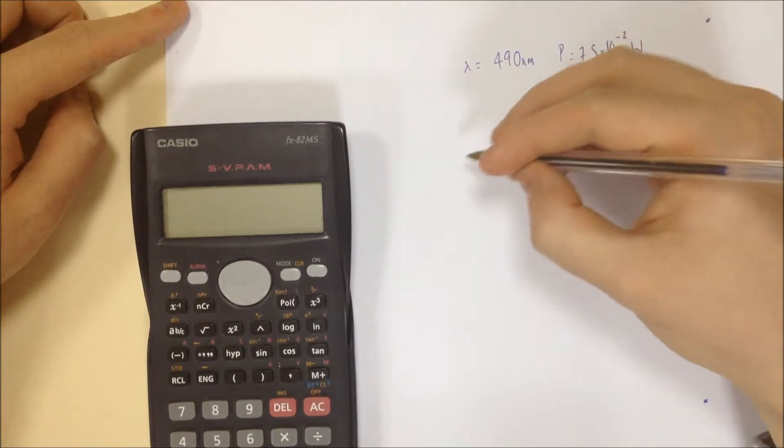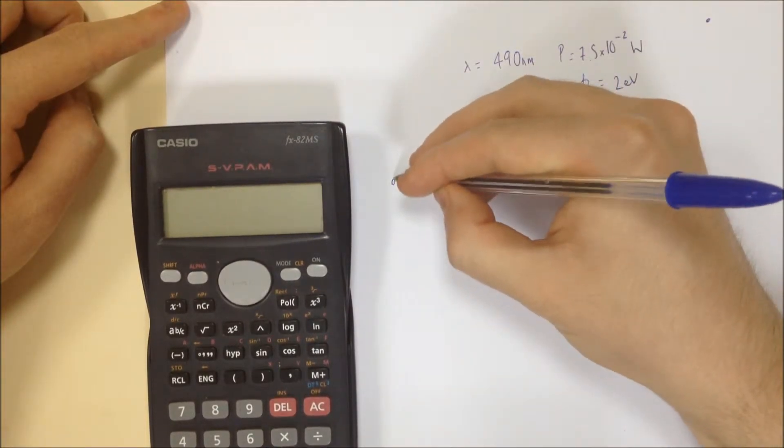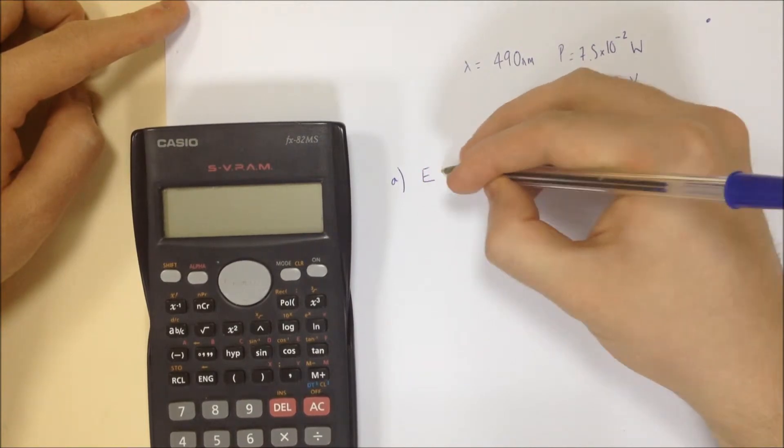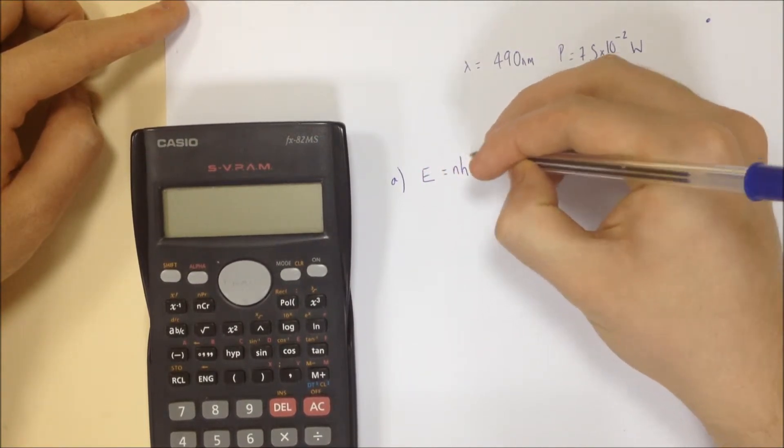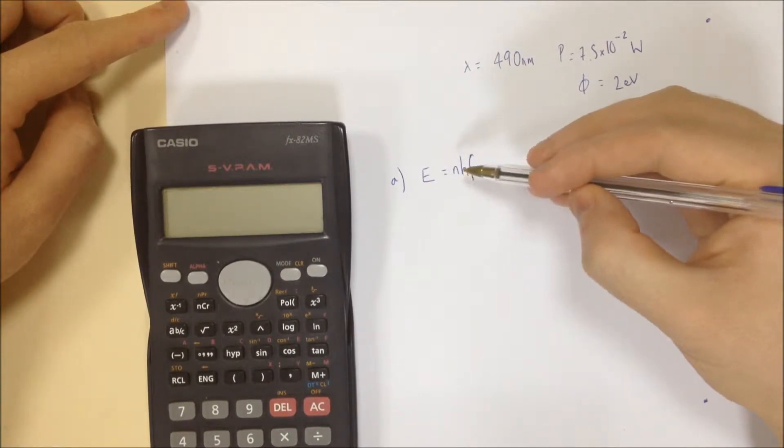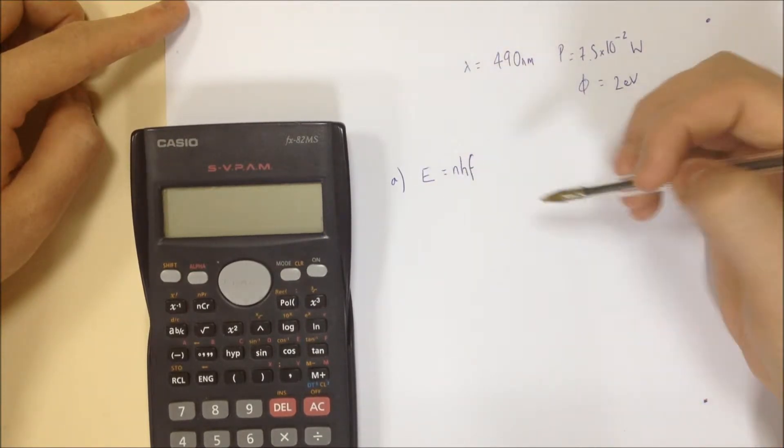Part A says the number of photons emitted per second. So the first thing to realize is that the number of photons per second is n divided by t, number divided by time. So we know the equation E equals n HF. A few people didn't really like this equation. It is just E equals HF, but it's total energy.